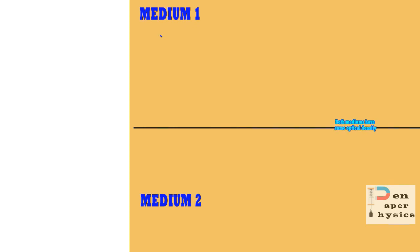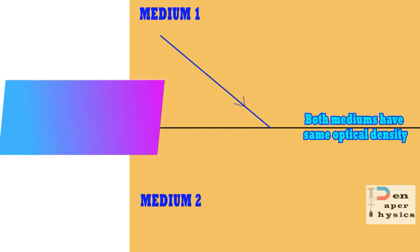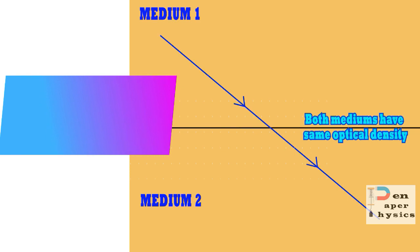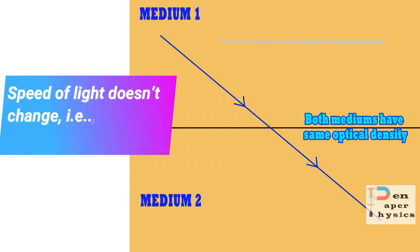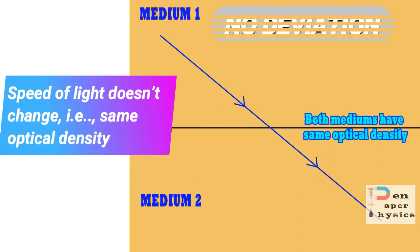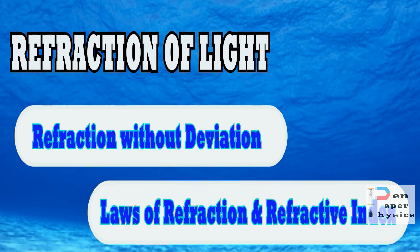There is another possibility for light to travel from one medium to another without any deviation — that is only possible when the speed of light doesn't change as it travels from one medium to another. That means we can assume both mediums have the same optical density. Next, we are going to learn about the laws of refraction and refractive index.